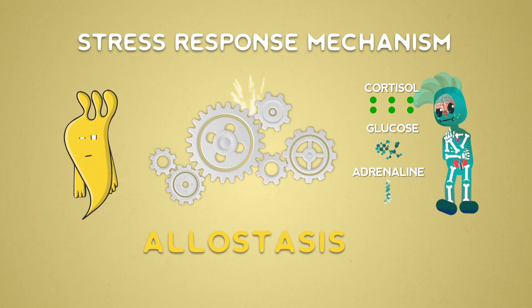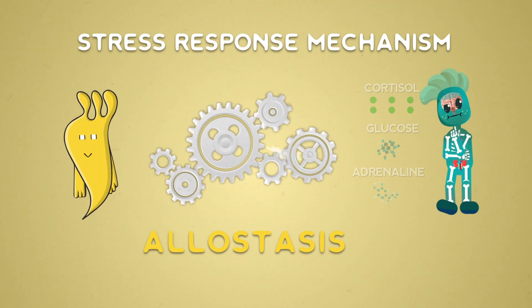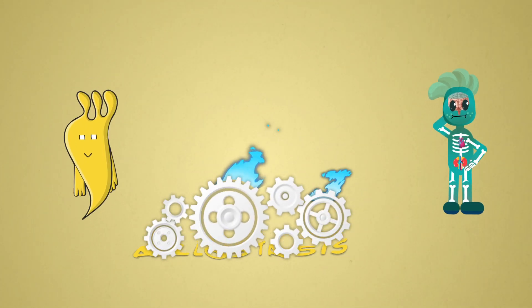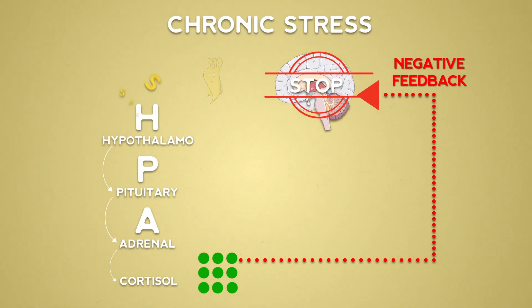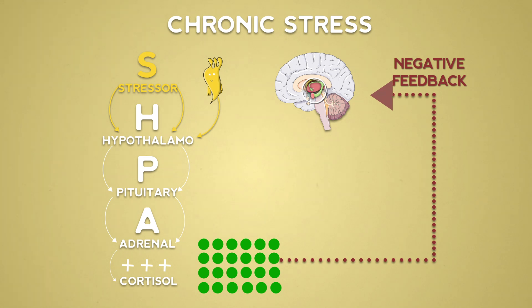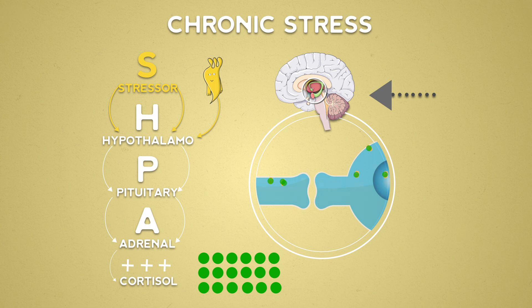However, if these cogs are constantly in use, the machine could go haywire, and the effects on our health could be harmful. This is exactly what happens with chronic stress. Cortisol is continuously synthesized and can no longer self-regulate. It saturates its own receptors, and negative feedback is no longer possible.